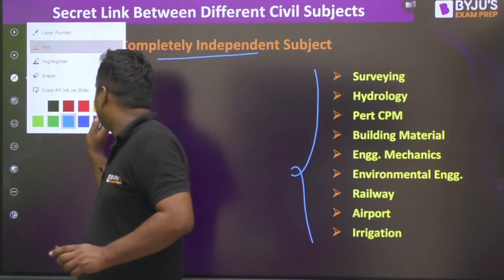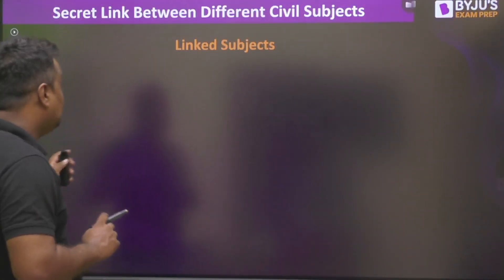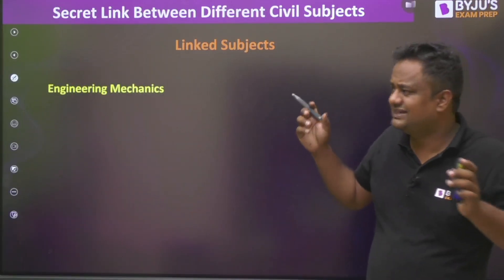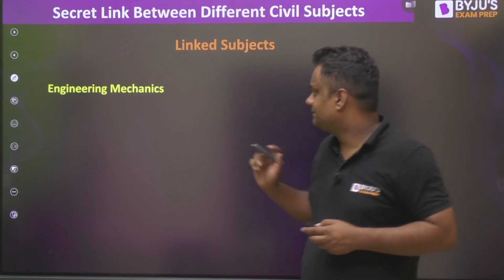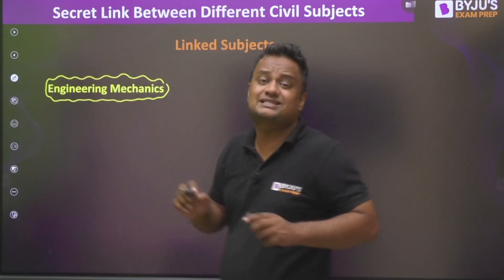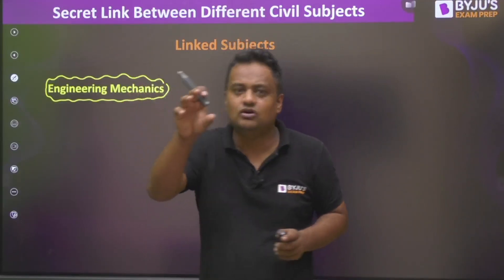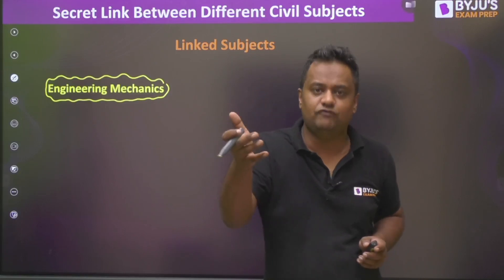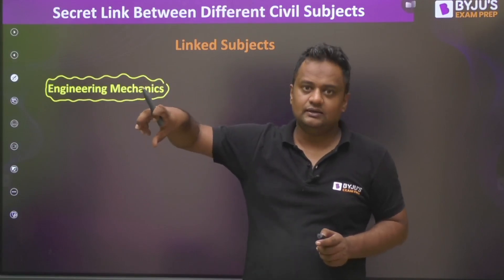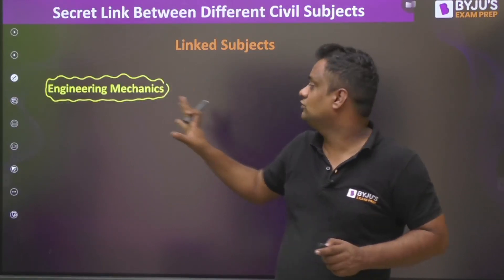Now let me go to the important topic — linked subjects, the secret link. Many students say the first subject they should study is Strength of Materials. I am a Strength of Materials teacher, but I say the first subject should be Engineering Mechanics, although it is not very high weightage. Because in SOM there is no topic that teaches you how to draw a Free Body Diagram, but FBD is used in Strength of Materials.